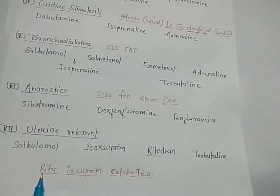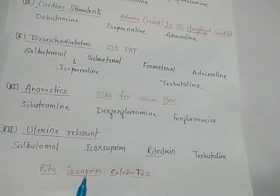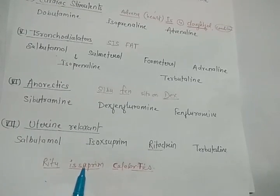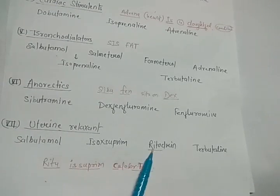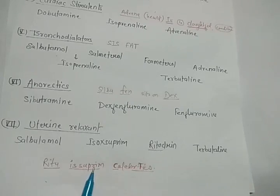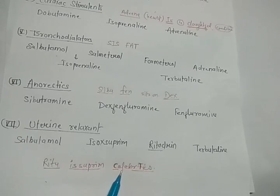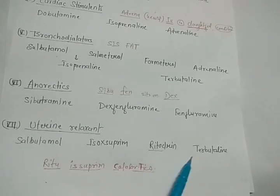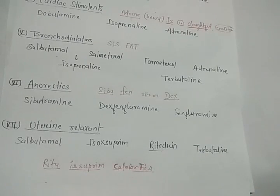For uterine relaxant, the trick is: 'Ritu is supreme celebrities.' Ritu = ritodrine, supreme = isoxsuprine, celeb = salbutamol, and T = terbutaline. With these tricks you can easily memorize the category and names of the drugs.